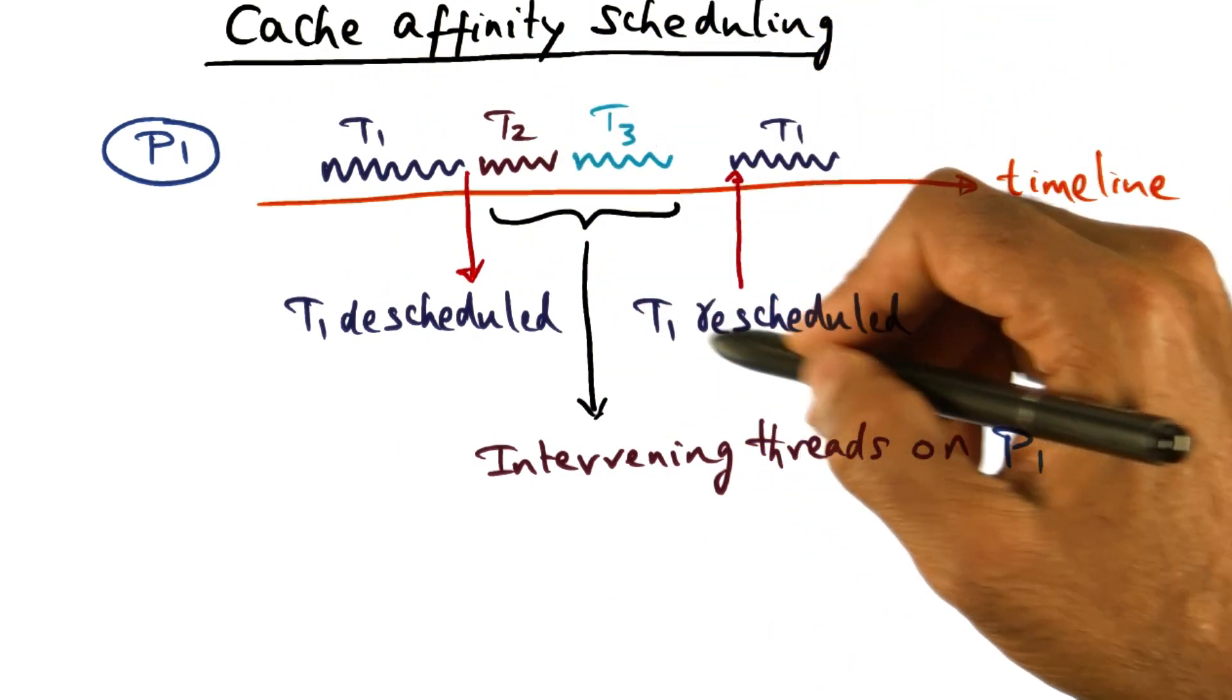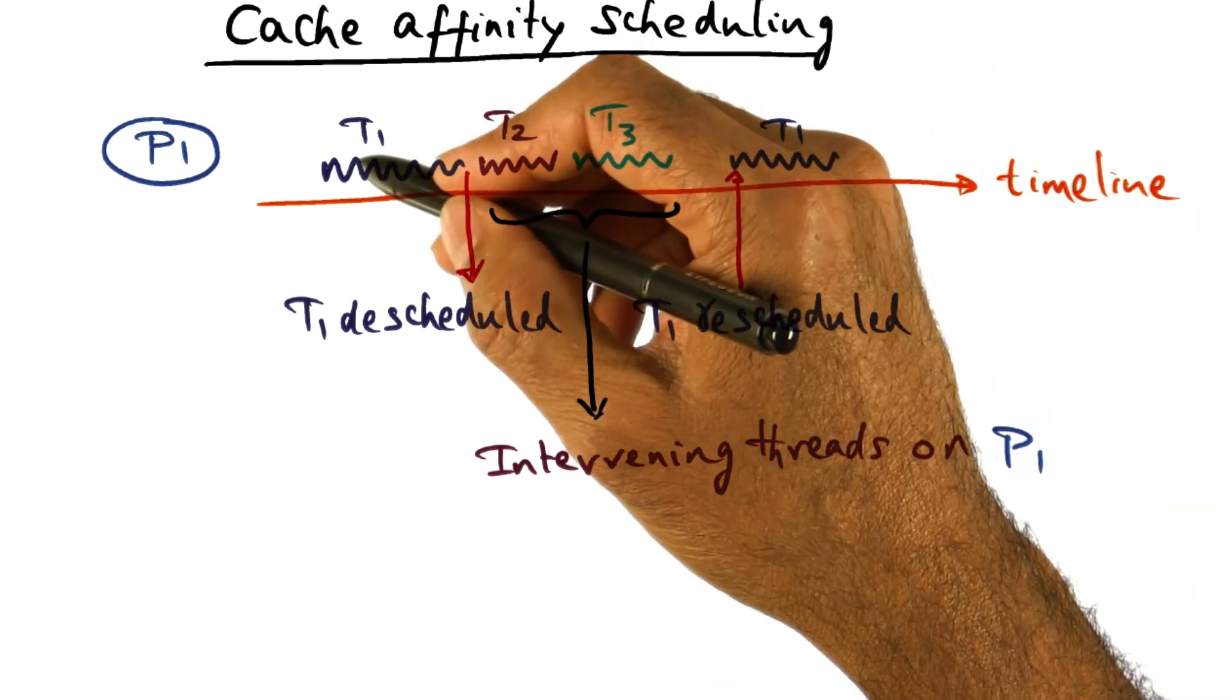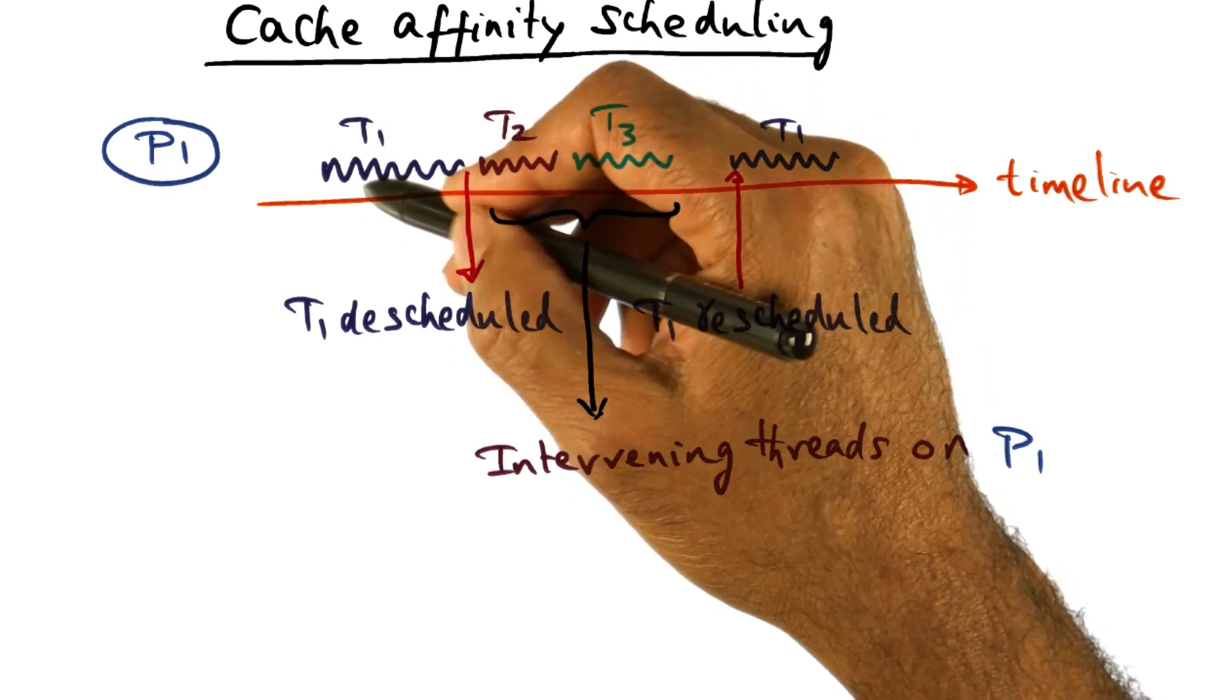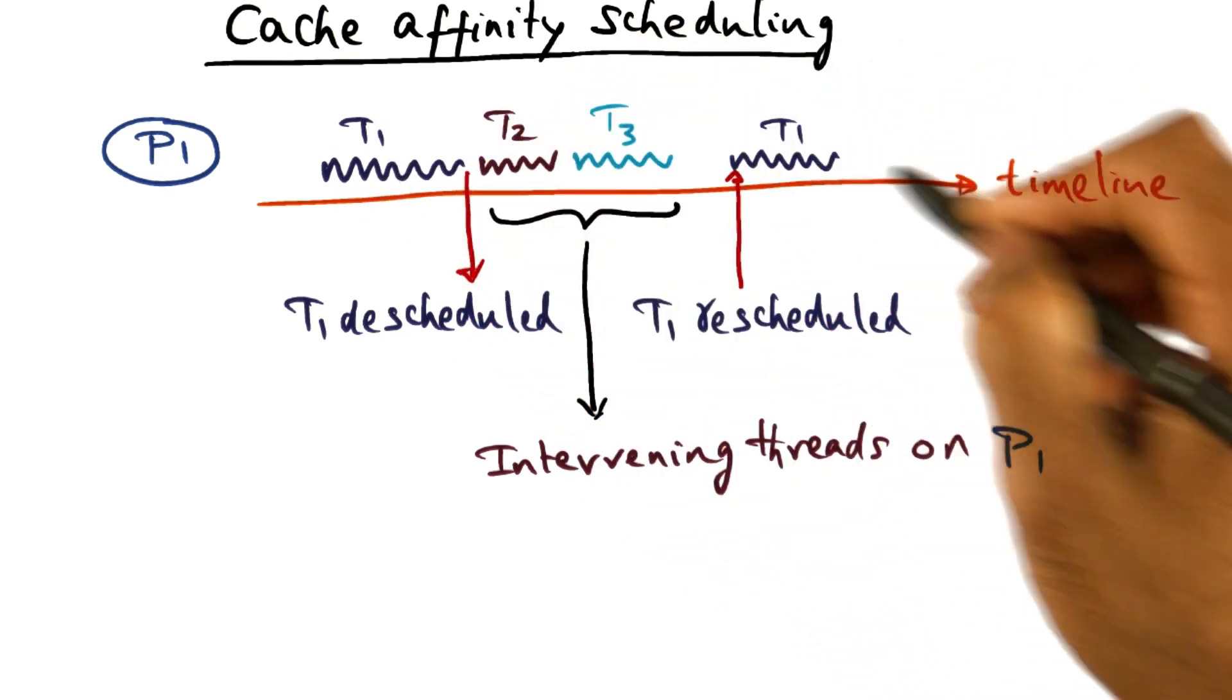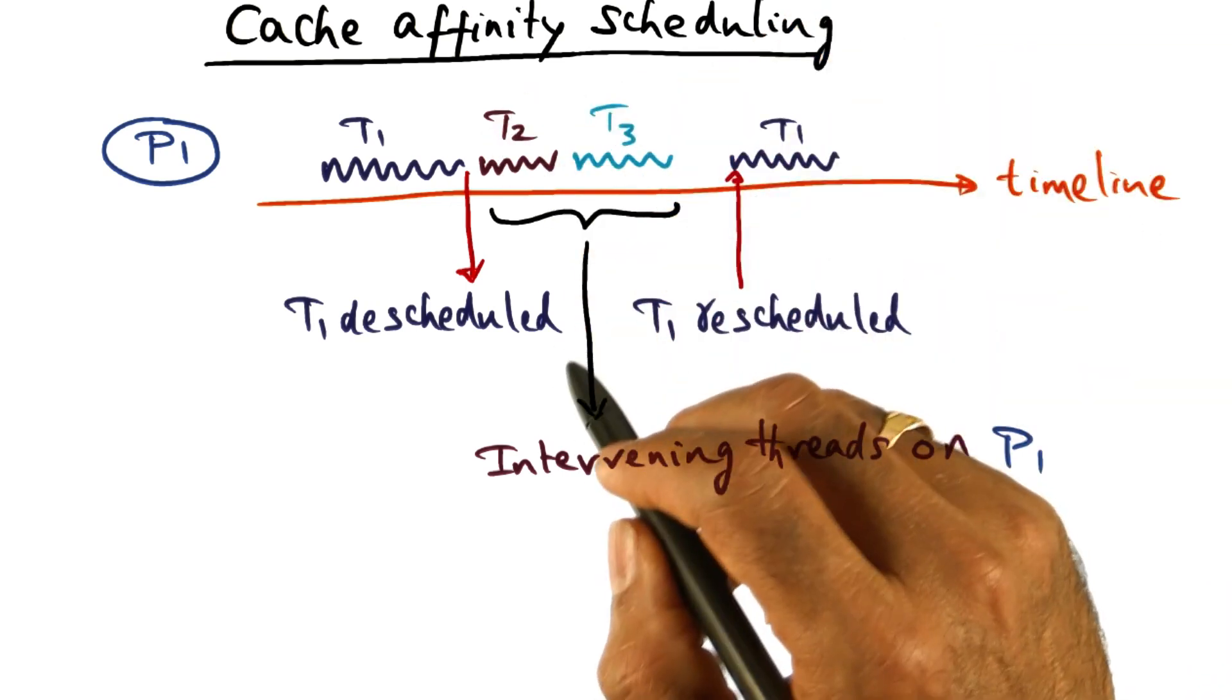And eventually, when T1 gets ready to run again, but in between its running on the processor here and running on the processor again here along this timeline, two other intervening threads ran on P1.